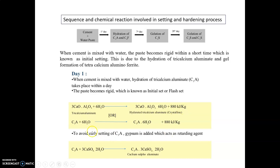This hydration process makes the material more crystalline due to hydration of calcium aluminate and gel formation of tetracalcium aluminate. To avoid early setting of C3A, gypsum is added, which acts as a retarding agent. The chemical form of gypsum is calcium sulphate, and the reaction converts C3A into calcium sulfoaluminate. The number of water molecules required is 6 moles for 3 moles of tricalcium aluminate — a 1:2 ratio. Similarly, the gypsum required is in a 1:3 ratio. The ratios of water and gypsum are important in deciding the crystalline nature.